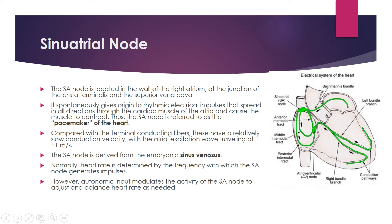The SA node is located in the wall of the right atrium at the junction of the crista terminalis and the superior vena cava. The crista terminalis is the partition between the rough and smooth portions of the right atrium internally; viewed from outside it is called the sulcus terminalis.